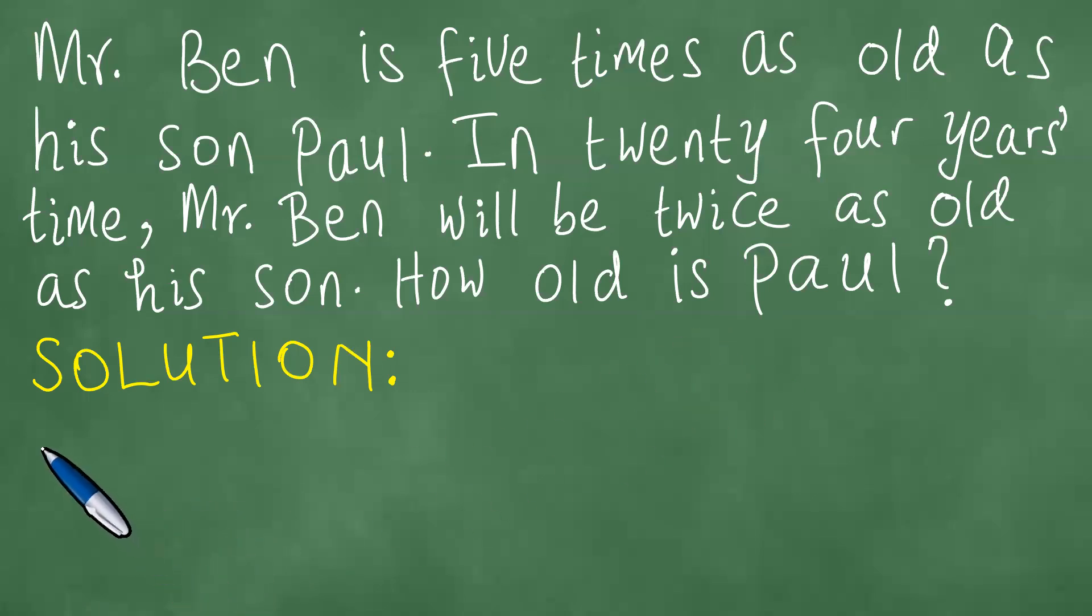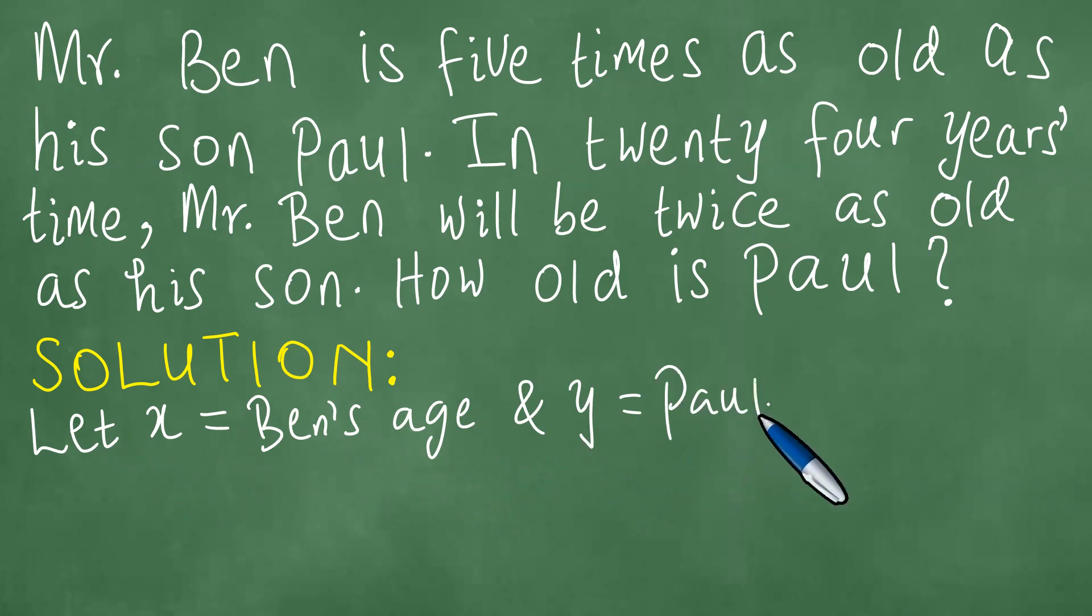Okay, so to solve this question, we're going to say let X be equal to Ben's age and Y be equal to Paul's age.